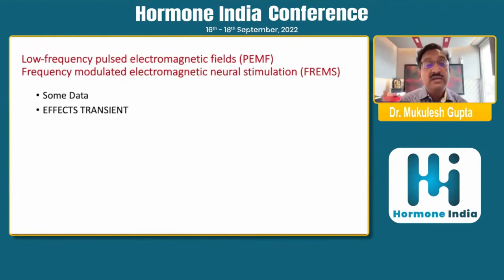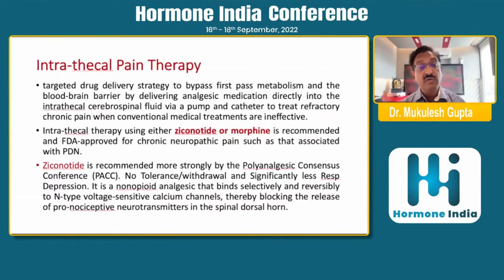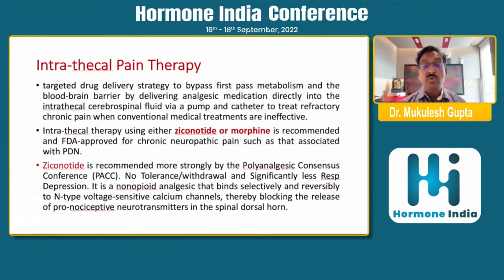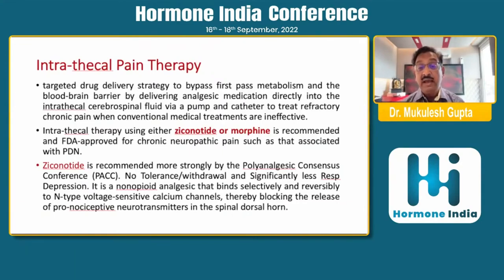Low-frequency pulsed electromagnetic field (PEMF) and frequency-modulated electromagnetic neural stimulation (FREMS) have some data, but the effects are transient. For intrathecal pain therapy, ziconotide or morphine is FDA-approved for chronic neuropathic pain including painful diabetic neuropathy. Ziconotide is more strongly recommended by the Polyanalgesic Consensus Conference — it has no tolerance or withdrawal and significantly less respiratory depression. It is a non-opioid analgesic that binds selectively and reversibly to N-type voltage-sensitive calcium channels, blocking the release of pro-nociceptive neurotransmitters in the spinal dorsal horn.